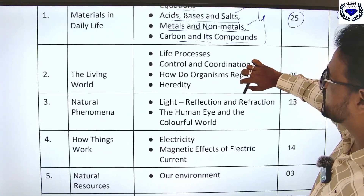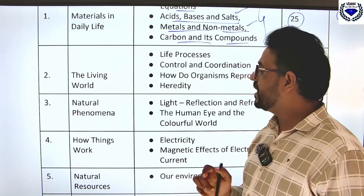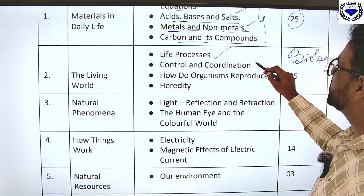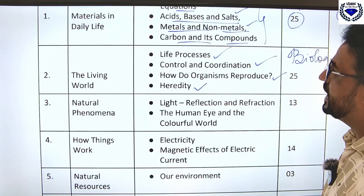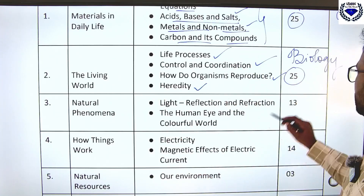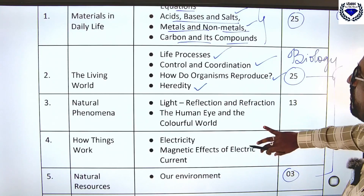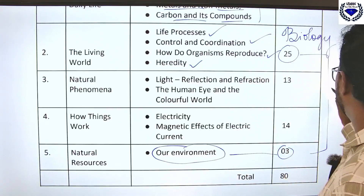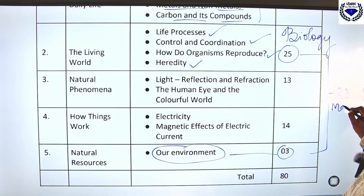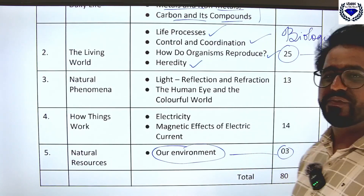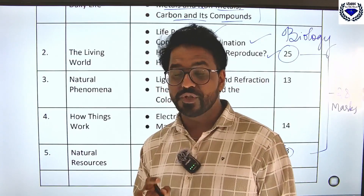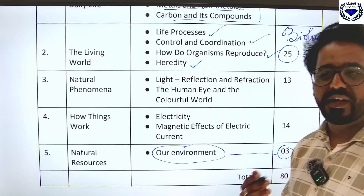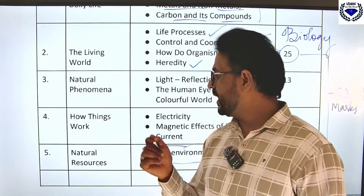Coming to biology, you will have a total of four chapters: Life Processes, Control and Coordination, How Do Organisms Reproduce, and Heredity. The total for these is 25 marks, plus 3 marks from 'Our Environment' under natural resources. So total biology you can expect is 28 marks — 25 plus 3. The 'Our Environment' question will be included in the biology part itself.